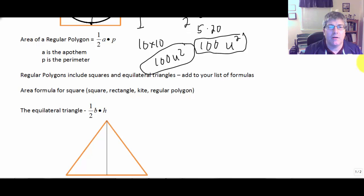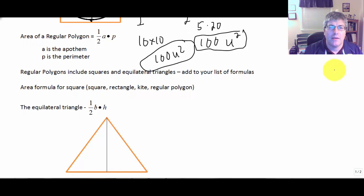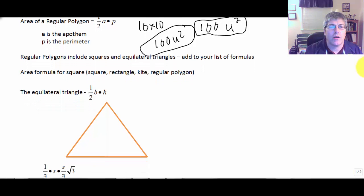And of course, remember that the area formula for a square is the same for a square, rectangle, kite, and a regular polygon. So you have all sorts of area formulas for a square.